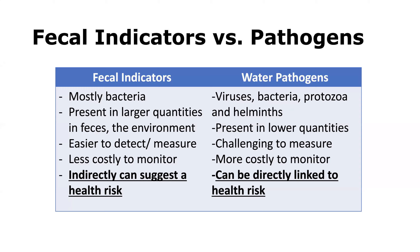Fecal indicators are mostly bacteria, present in larger quantities in feces and the environment relative to pathogens. They are easier and less costly to detect and monitor, and can indirectly suggest a health risk. Water pathogens include viruses, bacteria, protozoa, and helminths — they tend to be present in lower concentrations, are more challenging and expensive to measure, with less standardized methods, but can be directly linked to a human health risk.